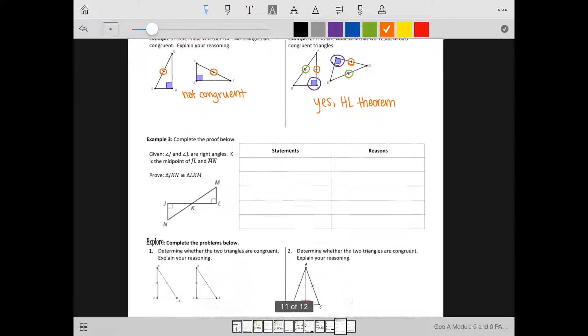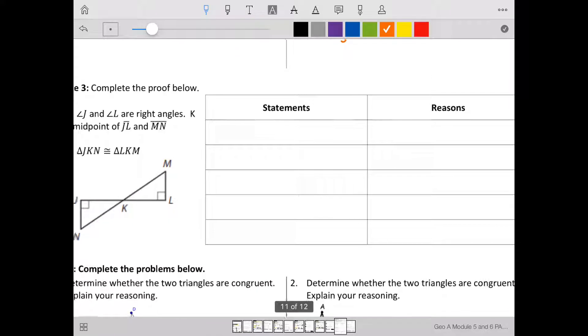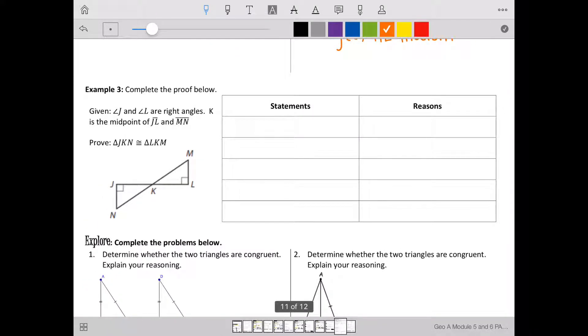Our last example is our proof. We always start with our given information. Given that J and L are right angles, and we are given that K is the midpoint of JL and MN.